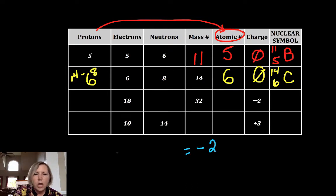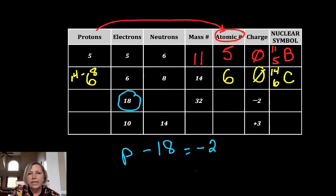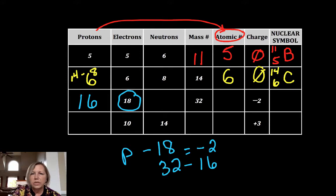I know that my protons minus my electrons which are 18 equals my charge. What number minus 18 is minus 2? Well, 16 minus 18 is negative 2. Now that I know my protons, I can get my neutrons because mass number minus those protons will give me 16 neutrons.